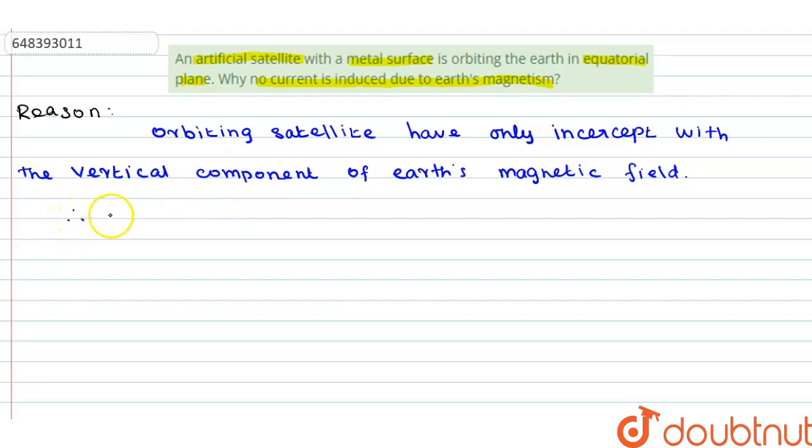Therefore, these vertical components are Earth's magnetic field.